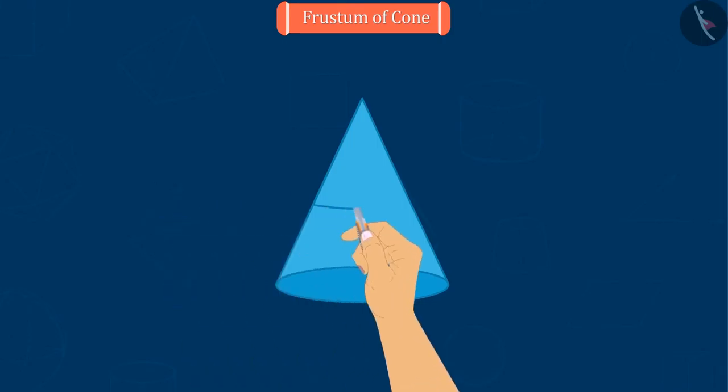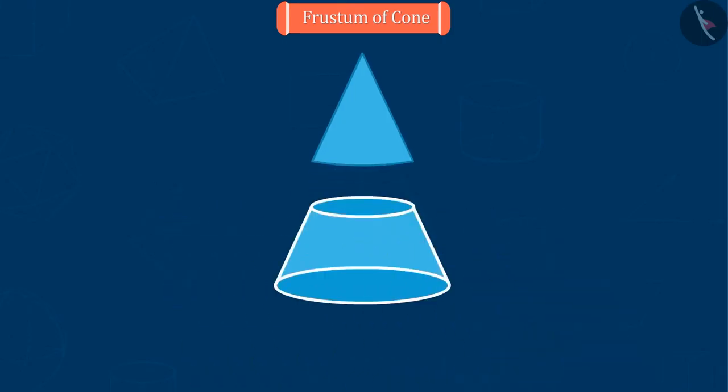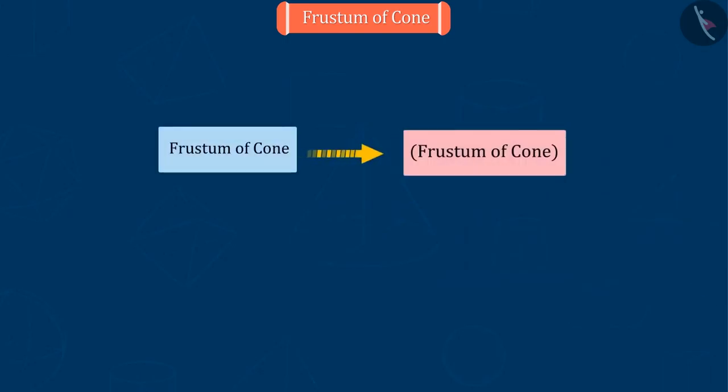If cone is cut horizontally, it gives one frustum of a cone. Today, we will know this. When pointed area of cone is removed, the rest is called frustum of cone. Frustum is a Latin word which means sliced piece.